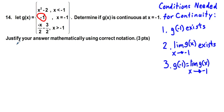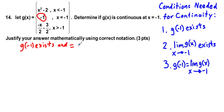Putting down the conditions in order: g of negative 1 exists and equals negative 1 — that's the circle at negative 1 on the graph. Secondly, we need to check if the limit as x approaches negative 1 of g of x exists.